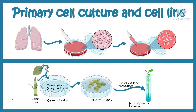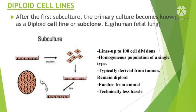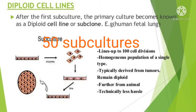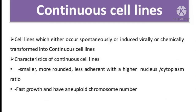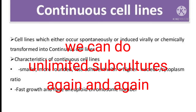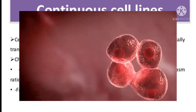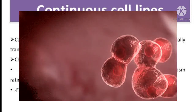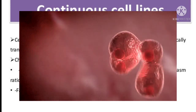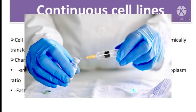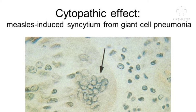Diploid cell strains have the capability of up to 50 serial subcultures and are employed for the production of viral vaccines, such as rabies vaccine production in WI-38 human embryonic lung cell strain. Continuous cell lines are cells of a single type capable of indefinite growth in vitro, usually derived from cancerous tissue. These cells grow faster, their chromosomes are haploid, and they can be serially cultivated indefinitely. Some cell lines such as the Vero cell line are used for rabies vaccine manufacture.